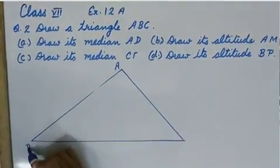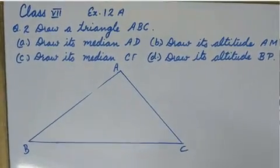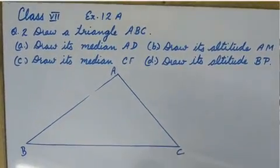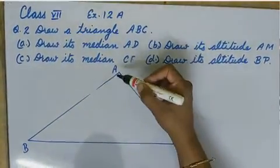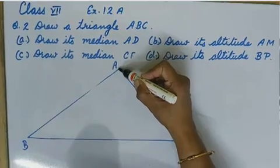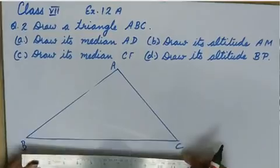If ABC is a triangle and we have to draw the median from point A, we should know the midpoint of BC.